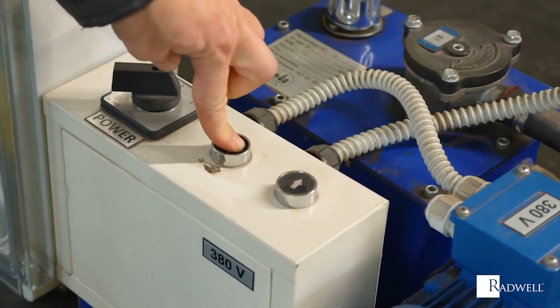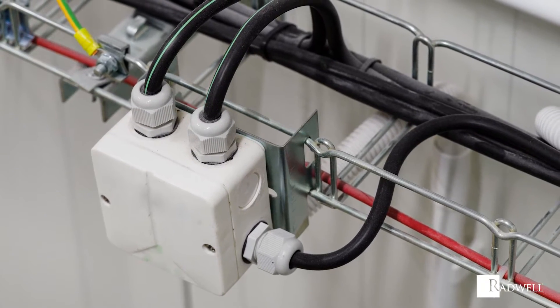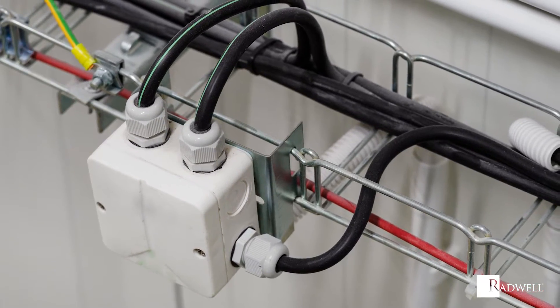Cable glands can be made up of multiple types of materials. This includes plastic, steel, brass, or aluminum.